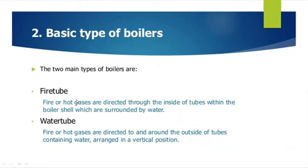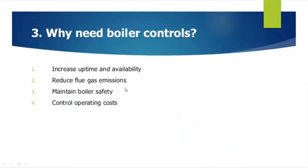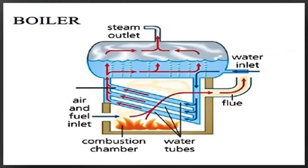There are fire tube boilers and water tube boilers. In fire tube boilers, hot gases are directed through the inside of the tubes within the boiler shell, which are surrounded by water. In water tube boilers, water is inside the tubes and fire is on the shell side. These are the most common boilers in industry. Effective instrumentation and controls are needed to increase uptime and availability of steam, reduce flue gas emissions, maintain boiler safety, and control operating costs.